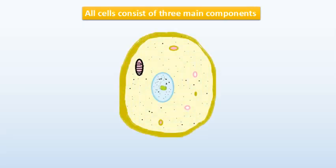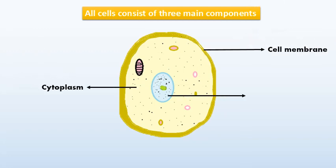All cells consist of three main components. Cell membrane. Cytoplasm. Nucleus.